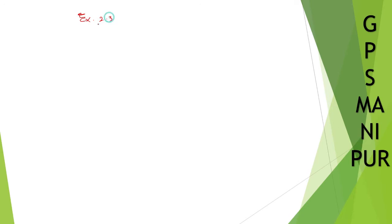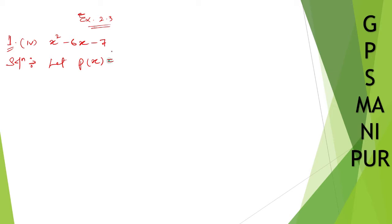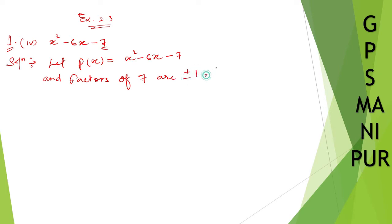Now we are doing exercise 2.3, question number 1, factorize by using the factor theorem, roman number 4. Let me write down the question: x squared minus 6x minus 7. Solution: let p(x) equal to x squared minus 6x minus 7. The factors of the constant 7 are plus or minus 1 and plus or minus 7, since 7 is a prime number.